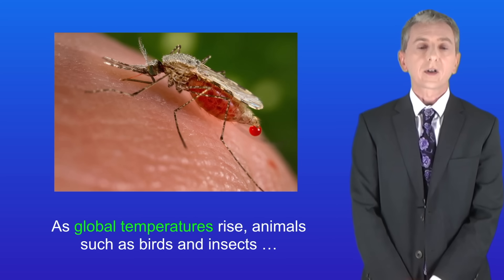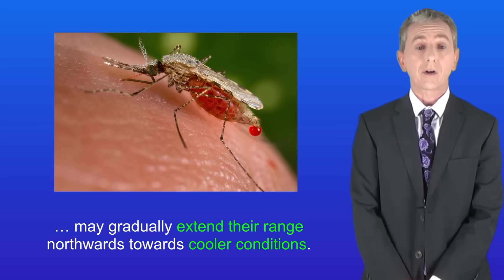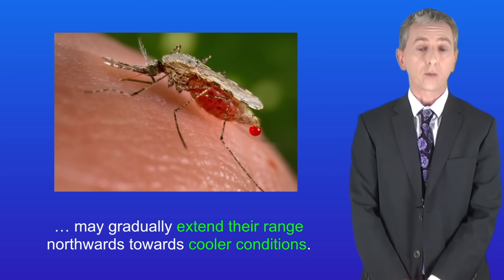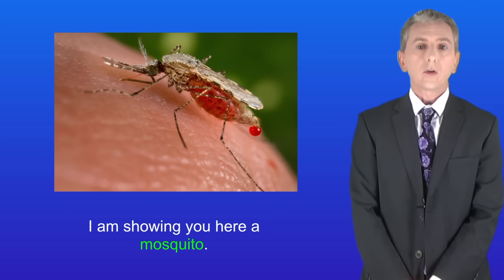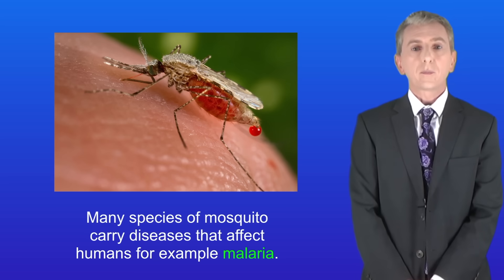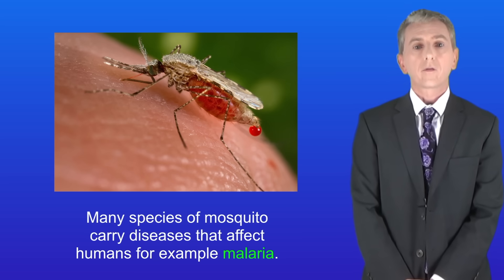As global temperatures rise, animals such as birds and insects may gradually extend their range northwards towards cooler conditions. For example, many species of mosquito carry diseases that affect humans, such as malaria.